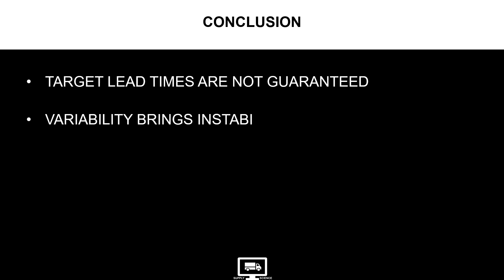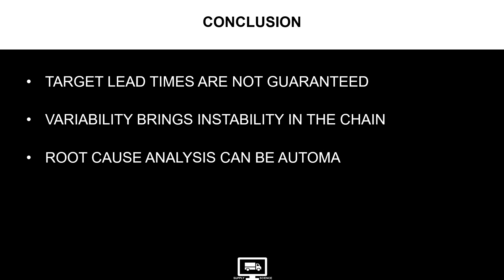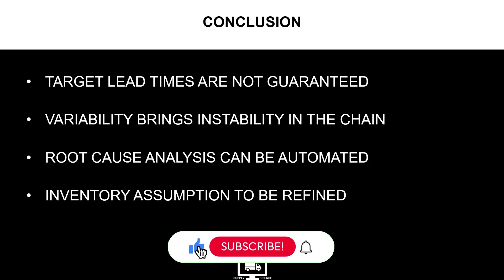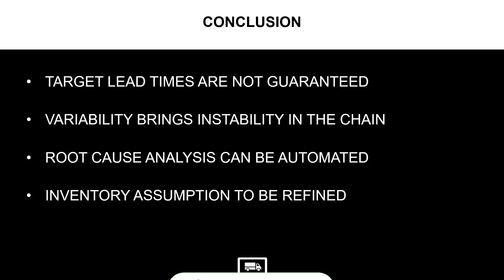To conclude, in this example we showed that target lead times are not guaranteed. Scenarios with late deliveries bring a lot of instability to the supply chain and drain energy from operational teams. You can automate this kind of analysis if your company is developing advanced end-to-end supply chain capabilities — it starts with harmonized data and connected systems. Finally, you need to make sure that your inventory managers are reviewing their assumptions considering this variability. If you have any questions or want to share your own experience of supply chain resilience impacted by process variability, feel free to share in the comment section.